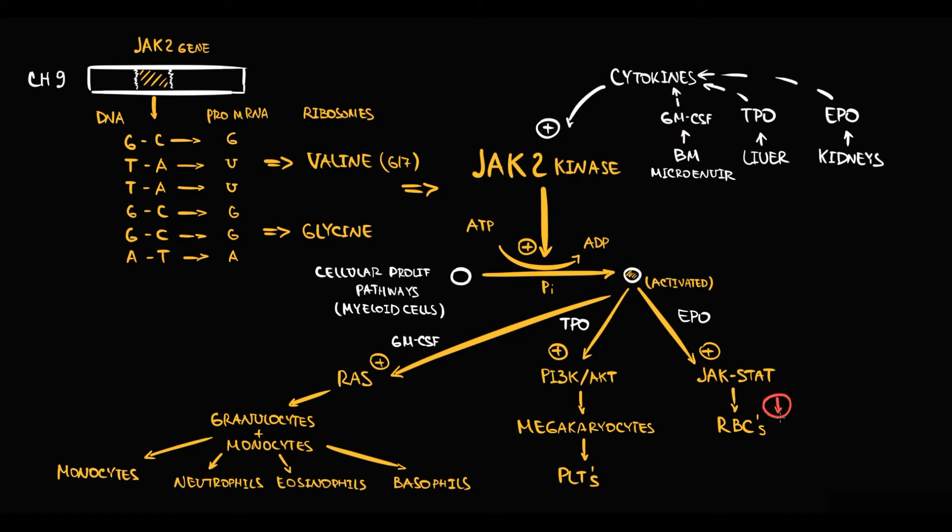For example, if the amount of red blood cells decreases, kidneys sense that the amount of red blood cells is low. So they secrete erythropoietin that acts on erythropoietin receptor, and this results in activation of JAK2 kinase. Erythropoietin forces JAK2 kinase to activate JAK-STAT pathway. In response to this, the production of red blood cells begins to increase. By this we maintain the normal amount of red blood cells in our blood.